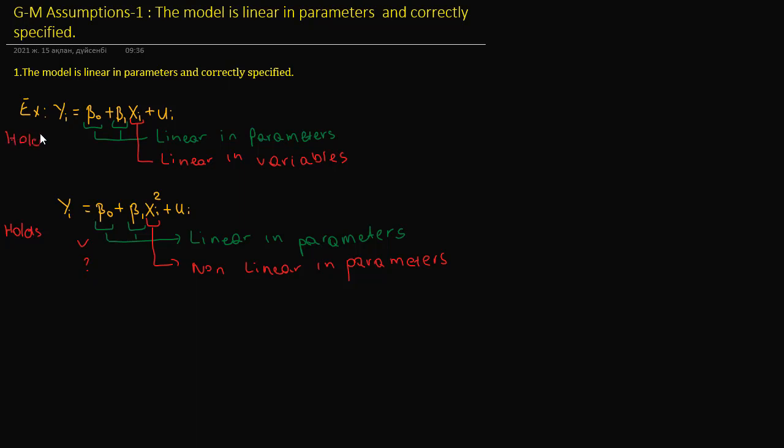Example 3: yi equals beta0 plus ln(beta1) times xi plus ui. Here, my parameters are beta0 and ln(beta1). Since ln(beta1) is my slope, it's nonlinear. We can see it's nonlinear in parameters. However, xi, my variable, is linear in variables.